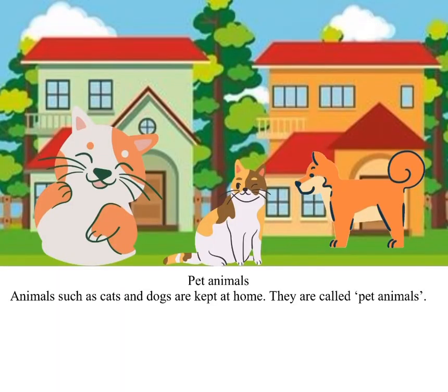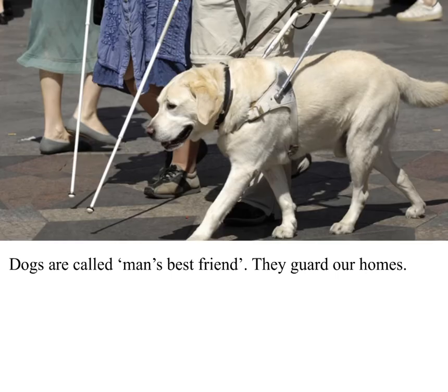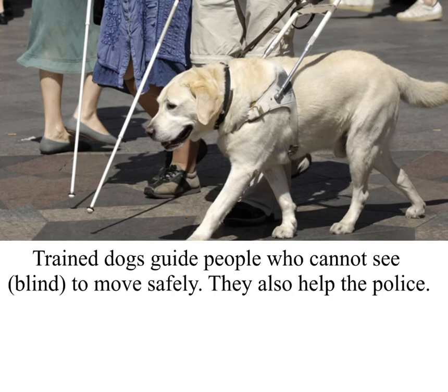Pet animals: Animals such as cats and dogs are kept at home; they are called pet animals. Dogs are called man's best friend. They guard our homes. Trained dogs guide people who cannot see — the blind — to move safely. They also help the police.